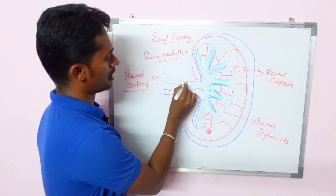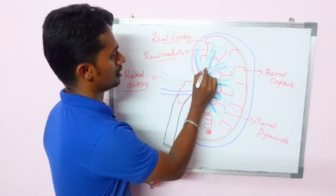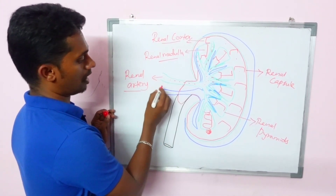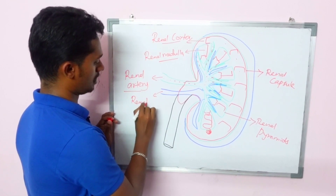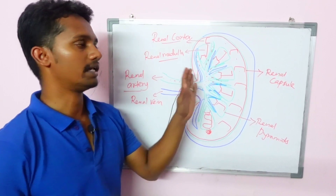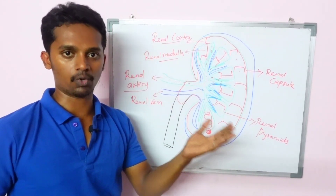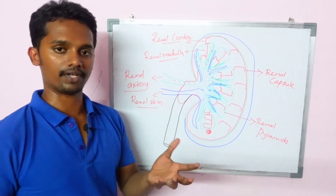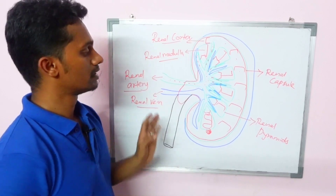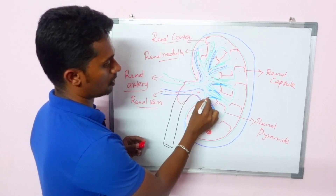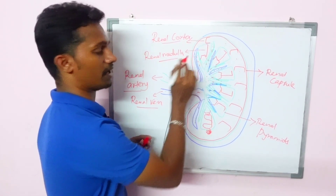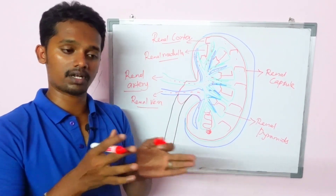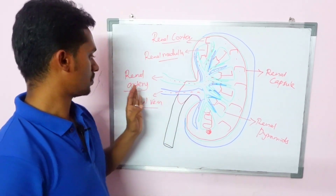The renal artery is a small root that branches inward. When the urine is formed at the end, it will be collected. The renal artery brings blood in, and in the opposite direction, the renal vein takes blood out. So what is the renal vein? In the renal artery, the urine is filtered. The cleaned blood is then returned again through the renal vein. That is deoxygenated blood, which goes towards the heart.